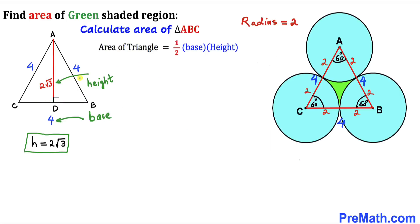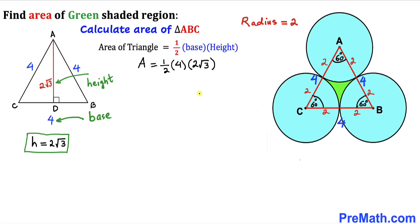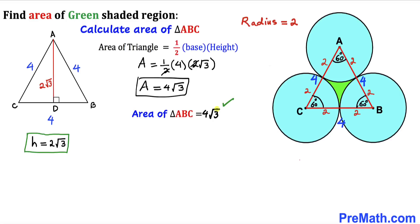Now let's calculate the area of equilateral triangle ABC. Our base is 4 units and our height is 2 times the square root of 3. Using the area formula — one half times base times height — area equals one half times 4 times 2 root 3. The 2's cancel, giving us an area of 4 times the square root of 3.